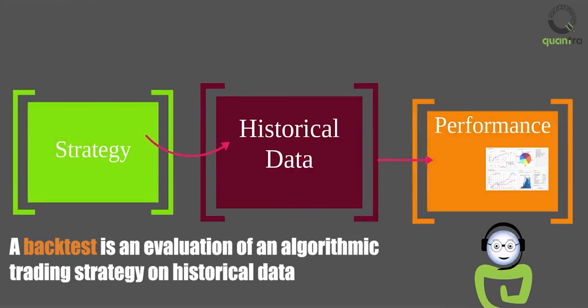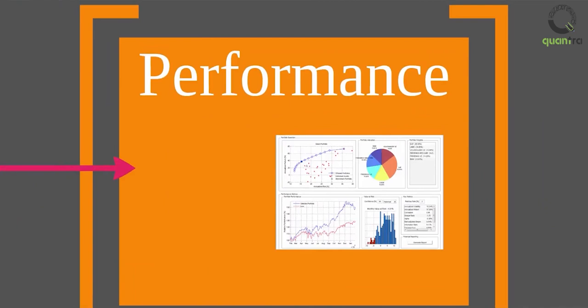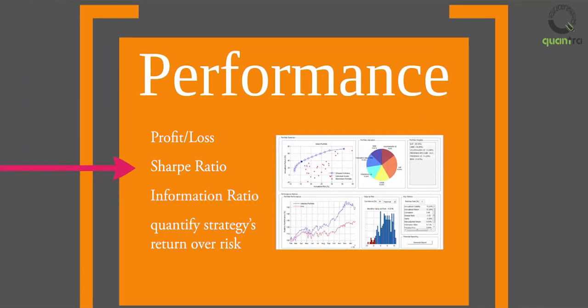Backtest results usually show the strategy's performance in terms of profit and loss. Some popular performance statistics, like Sharpe ratio or information ratio, also help to quantify the strategy's return over risk.